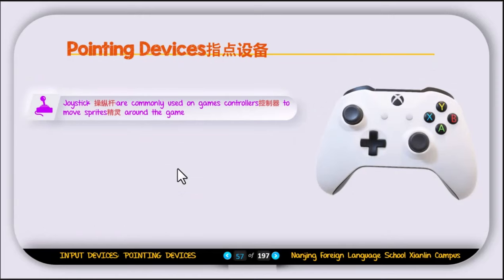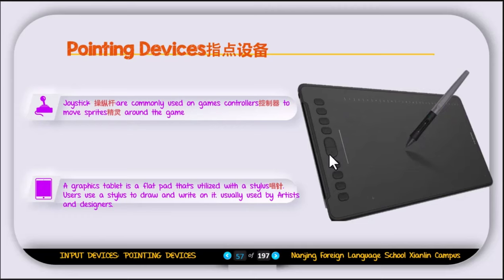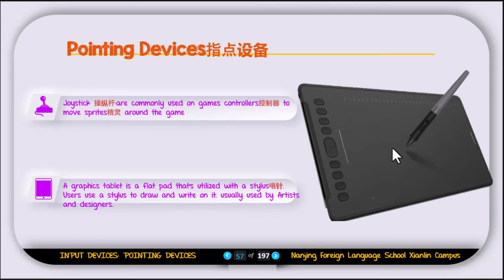Another pointing device is the joystick, commonly used on game controllers to move a character around the game. Next is the graphics tablet, a flat pad used with a stylus — a pen-like device. Users draw and write on it, which is useful for artists, designers, and teachers. You connect the tablet to the laptop and whatever you do on the tablet appears on screen. There are two types: one without a screen and a more expensive one that mirrors the laptop screen.